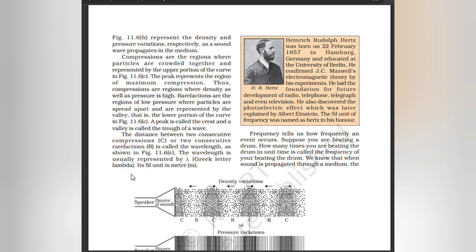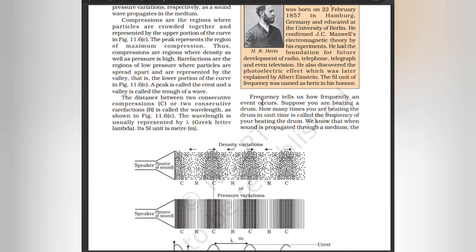Heinrich Rudolf Hertz was born on 22nd February 1857 in Hamburg, Germany, and educated at the University of Berlin. He confirmed J.C. Maxwell's electromagnetic theory by his experiments. He laid the foundation for future development of radio, telephone, telegraph, and even television. He also discovered the photoelectric effect, which was later explained by Albert Einstein. A unit of frequency was named Hertz in his honor.